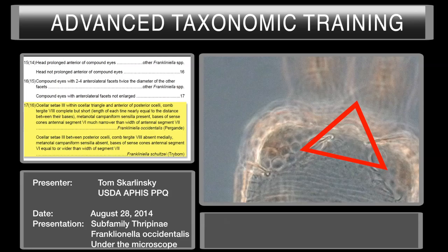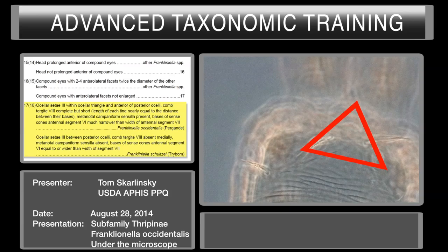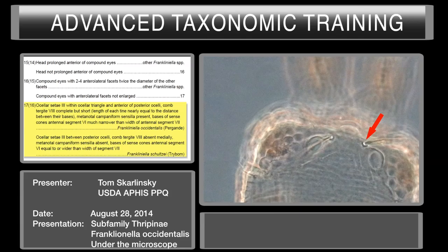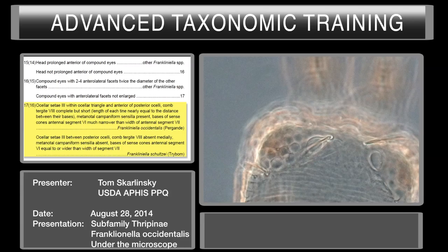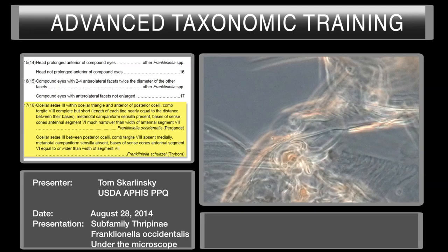Couplet 17: ocellar setae three - where is it? Is it within the ocellar triangle? The ocellar triangle is this area if you draw a tangent from ocellus to ocellus and the outside. Are the ocellar setae three within this triangle? They are within this triangle. Are they anterior of the posterior ocellus? Just slightly. So they're within this triangular area and are just anterior of it.